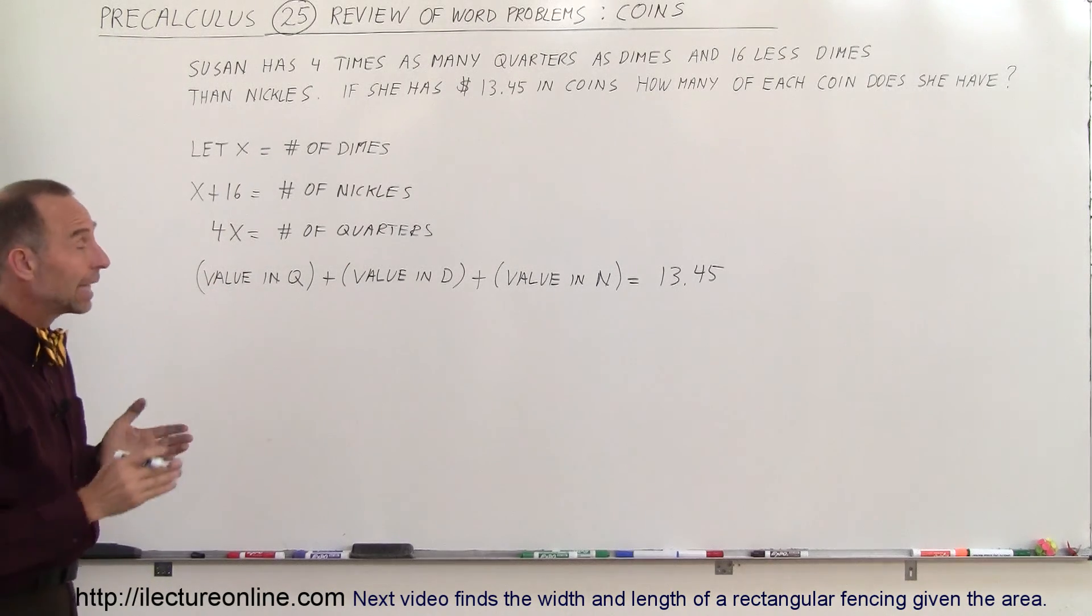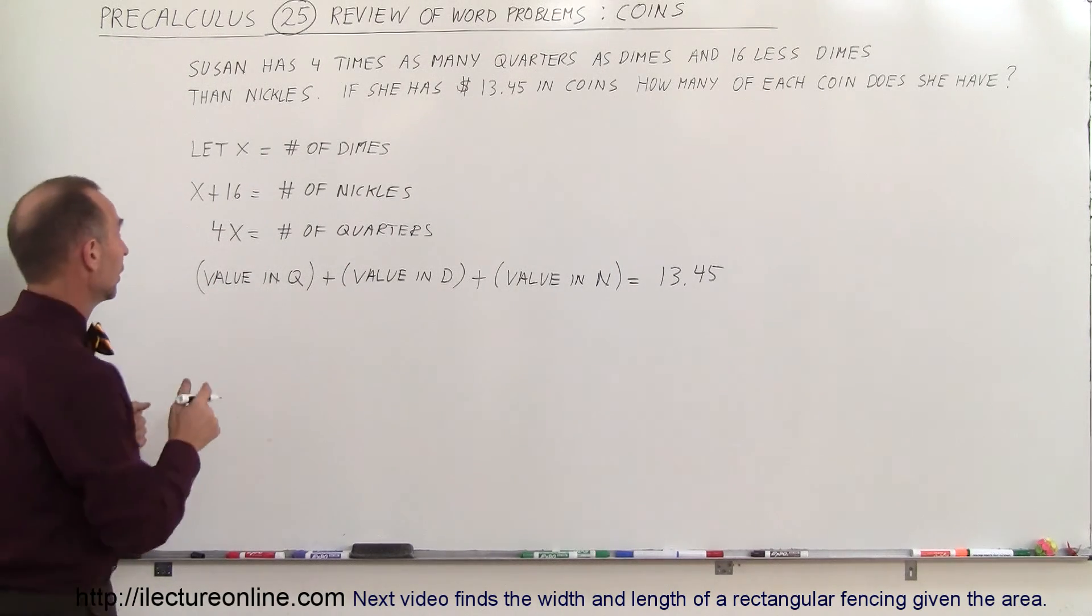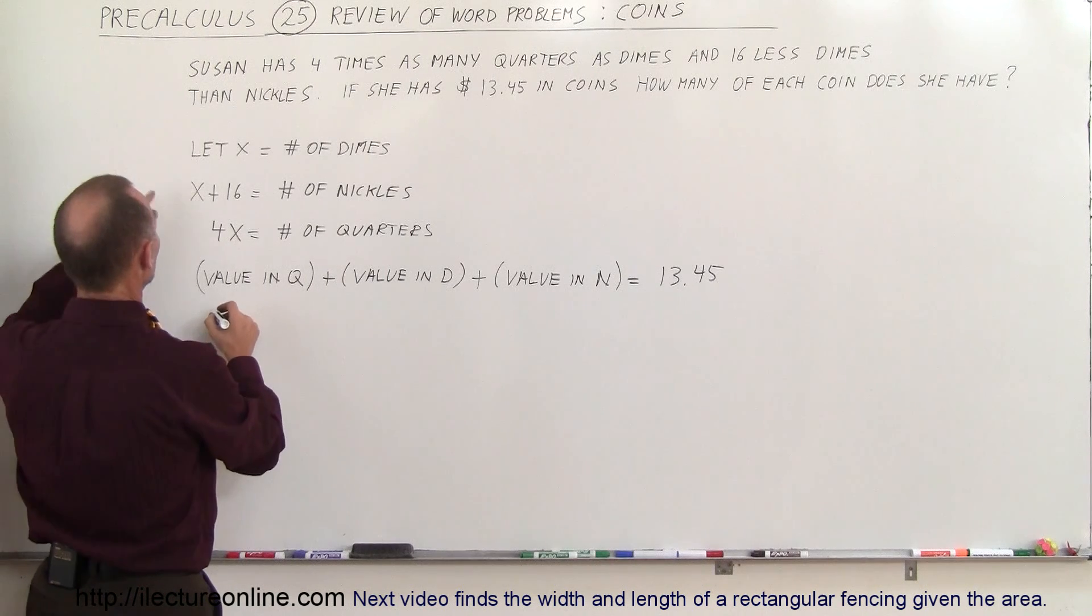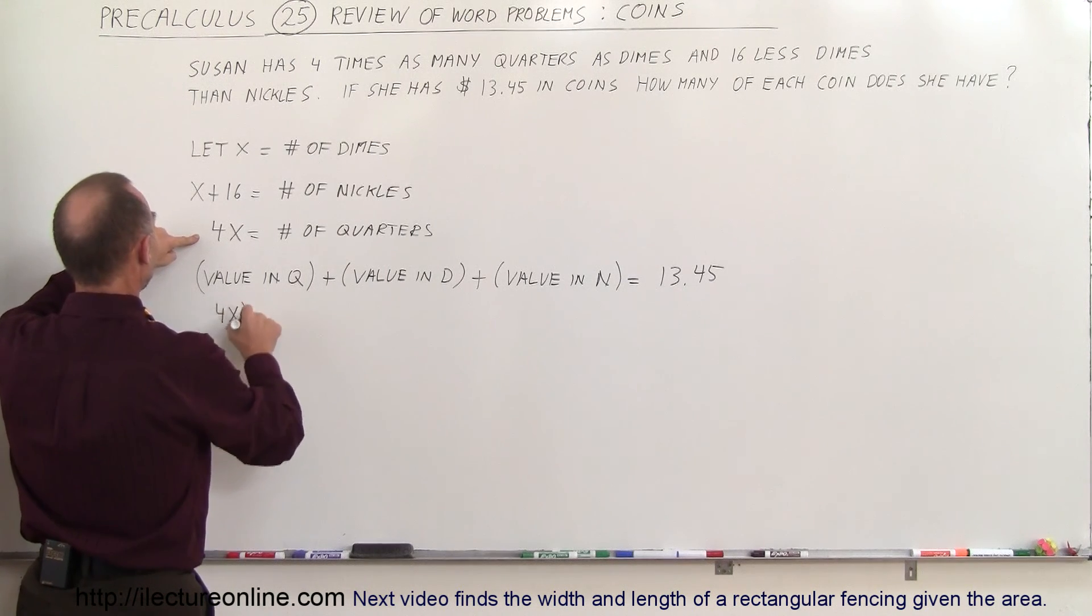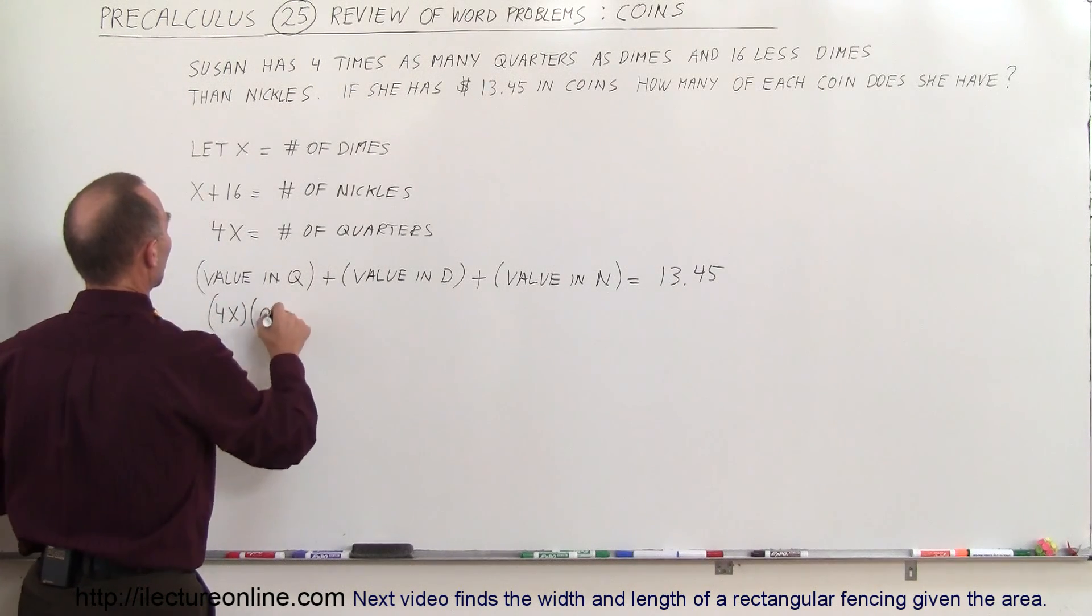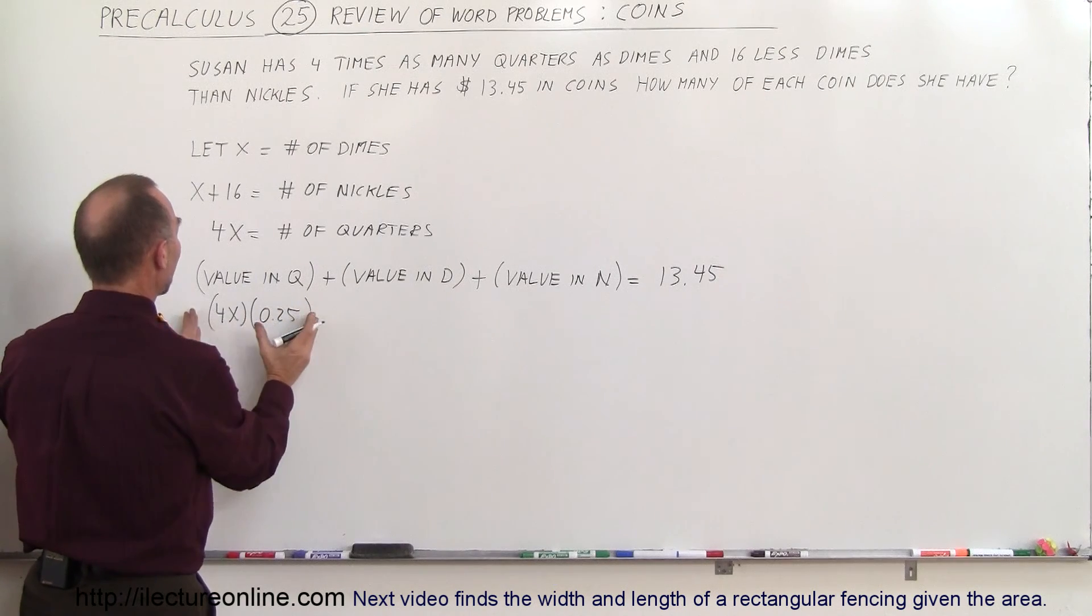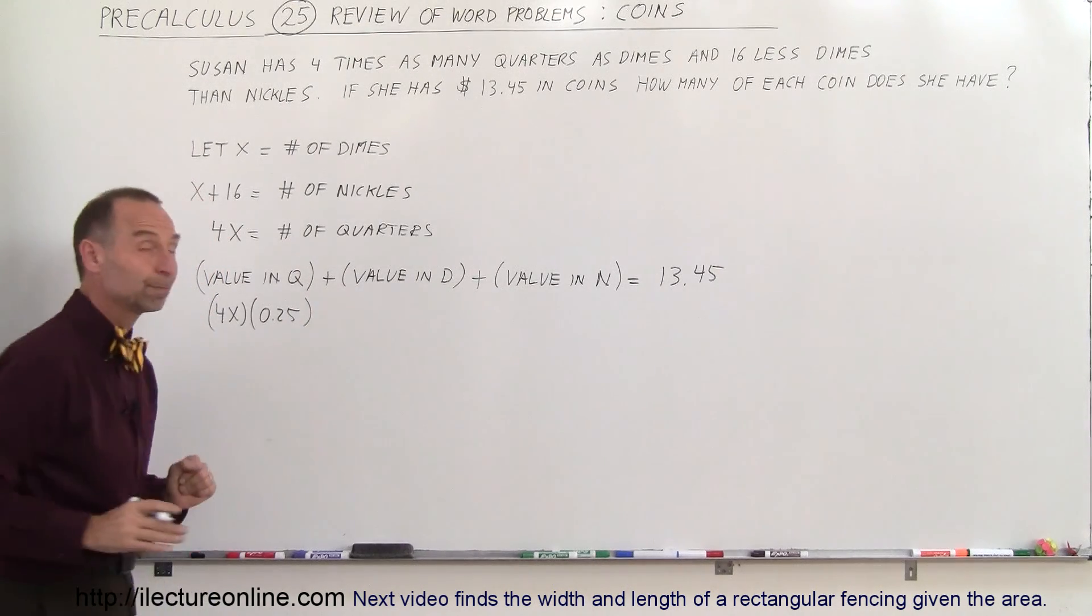So how do we express the amount of value that we have in quarters? Well, we take the number of quarters times the value for each quarter. And so we have the number of quarters, which is 4X, times the value of each quarter, which is 0.25. That would be the value bestowed upon all the quarters.